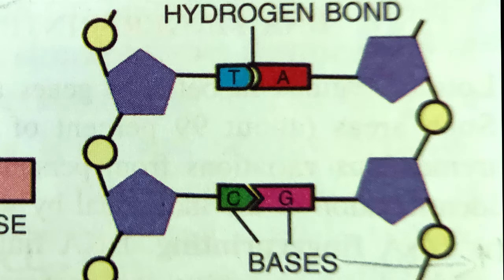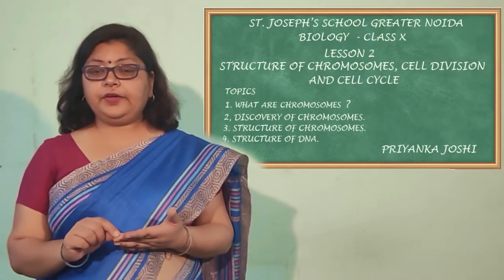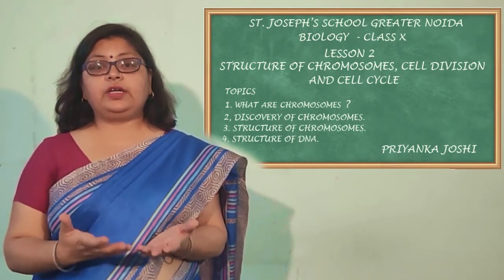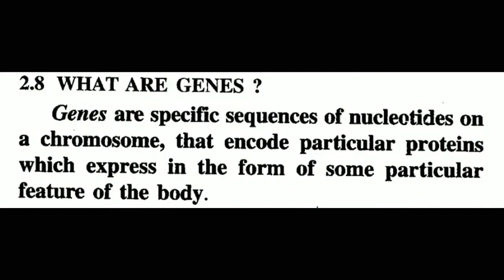Adenine pairs with thymine with two hydrogen bonds, and guanine pairs with cytosine with three hydrogen bonds. Now, you must be thinking: if chromosomes are the hereditary carriers and the carriers are genes, what are genes? Genes are specific sequences of nucleotides on a chromosome that encode particular proteins, expressed as particular features of the body. They are units of heredity transferred from parents to offspring and are responsible for specific characteristics of the offspring.